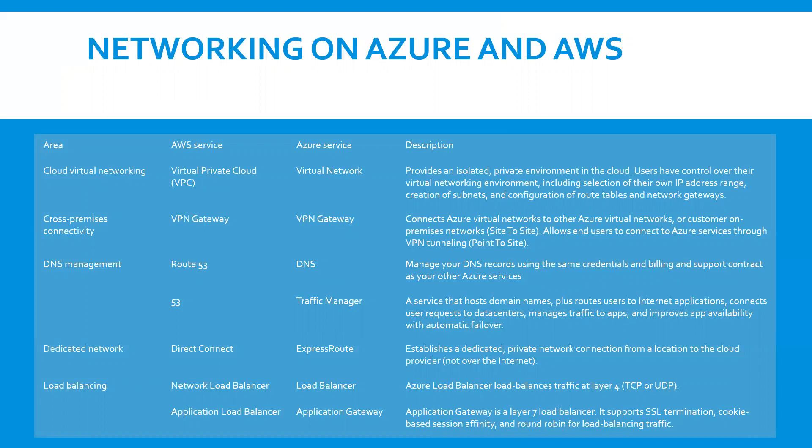Let's compare Route 53 in AWS with Azure DNS and Azure Traffic Manager. In AWS, Route 53 provides both DNS name management and DNS-level traffic routing and failover services. In Microsoft Azure, this is handled through two services: Azure DNS and Azure Traffic Manager. Azure DNS provides domain and DNS management, while Azure Traffic Manager provides DNS-level traffic routing, load balancing, and failover capabilities.